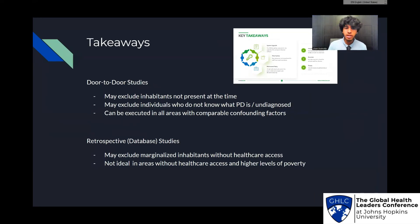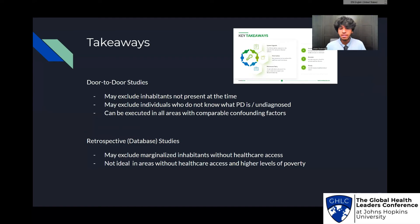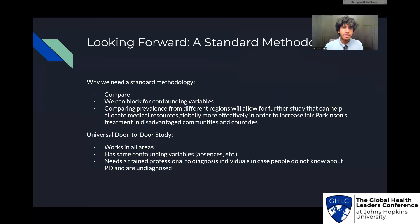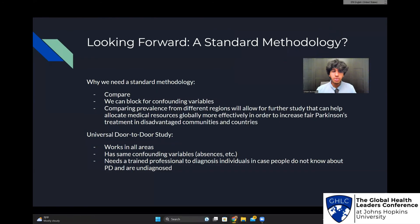Key takeaways: door-to-door studies miss inhabitants not present at the time of the study and individuals who don't know what Parkinson's disease is or are undiagnosed. However, they can be executed in all areas with comparable confounding factors. Retrospective database studies may exclude marginalized inhabitants without healthcare access and are not ideal in areas with high poverty. You simply cannot have database studies in certain areas, such as in Africa, where databases don't exist and don't include a majority of inhabitants. Thus, we need a standard methodology so that we can compare prevalence rates from different regions to help allocate medical resources equally and efficiently globally, increasing fair treatment in disadvantaged communities and countries.